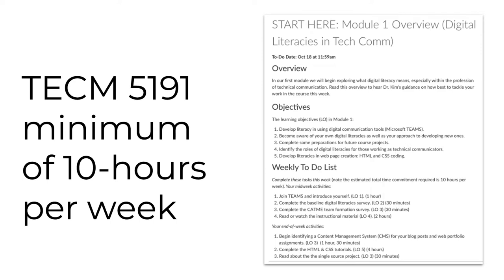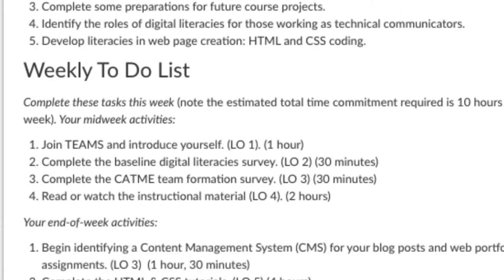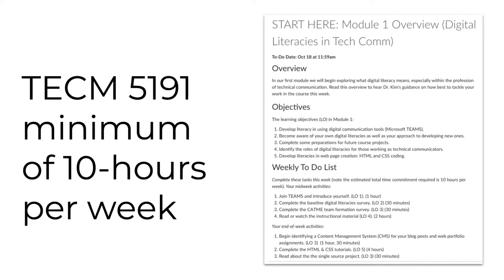Each to-do is connected to the module's learning objectives and ends with a recommended time allocation for that week. For example, I recommend that you spend two hours reading or watching the instructional materials by midweek in Module 1. If you find yourself spending far more time on an activity than I've indicated in the overview, please contact me so I can help you figure out why or where you're losing productivity. You should expect to spend 10 but not 20 hours per week on the course activities.